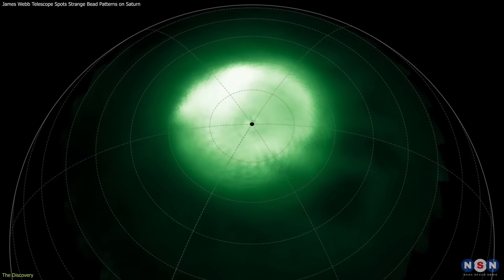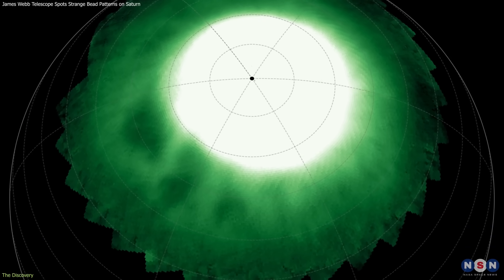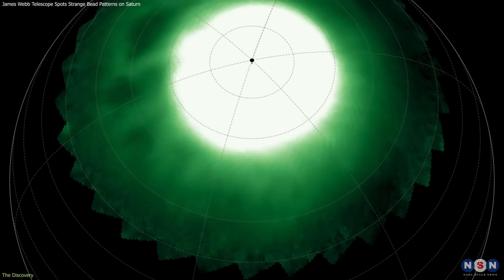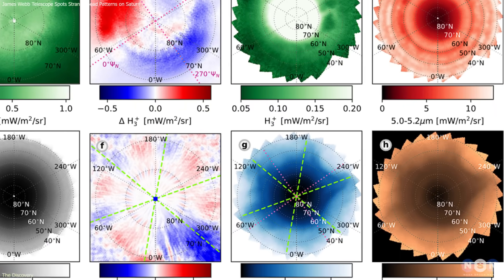In the ionosphere, it revealed dark bead-like patches scattered through its northern aurora. These beads were stable for hours, but they slowly drifted over time, showing they were real features, not random noise.